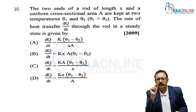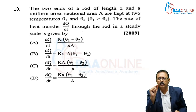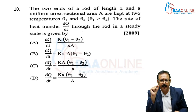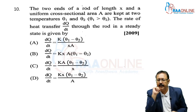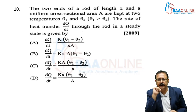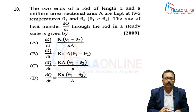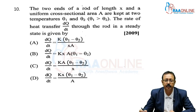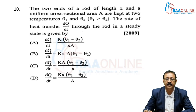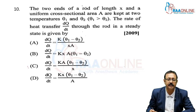Next, from AIPMT 2009: the two ends of a rod of length X and uniform cross-section area A are kept at temperatures θ1 and θ2, with θ1 > θ2. The rate of heat transferred DQ/DT in steady state is given directly by the formula: DQ/DT = KA(θ1 − θ2)/D. So we go with option C.